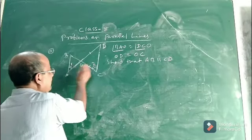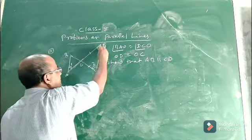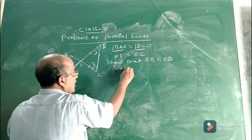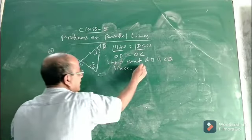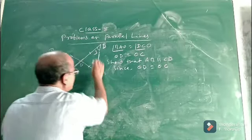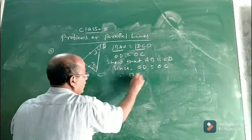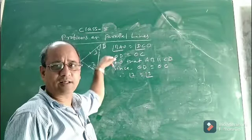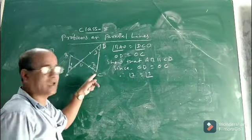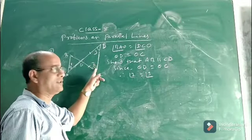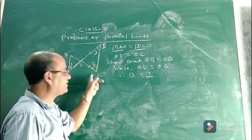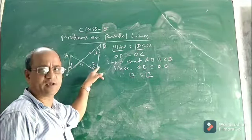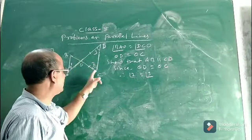Now we are given angle one and angle two. Let angle ODC be angle three. Since OD and OC are equal, triangle ODC is an isosceles triangle. In a triangle, if two sides are equal then their opposite angles must be equal — angles opposite to equal sides of an isosceles triangle are equal. So if OD equals OC, then angle two and angle three must be equal.